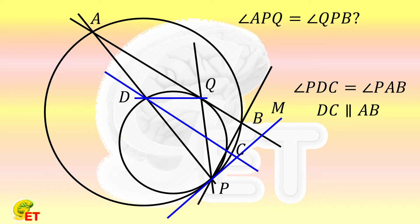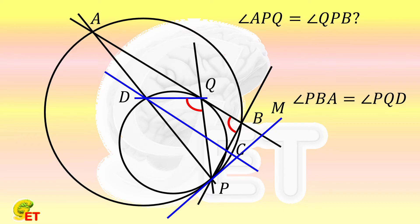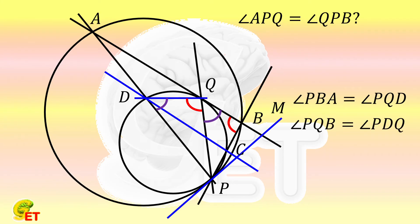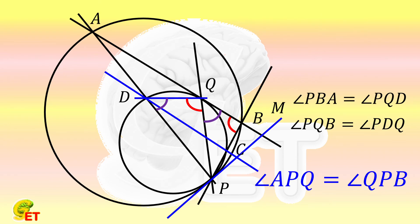Therefore angle PCD is equal to angle PBA. In the small circle, the circumference angles PCD and PQD correspond to the same arc, so they are also equal. Therefore angle PBA is equal to angle PQD. Since AB is the tangent of the small circle, and again according to the alternate segment theorem, angle PQB is equal to angle PDQ. So in the similar triangles PQB and PDQ, we obtain that angle APQ is equal to angle QPB. Thank you for watching and see you tomorrow.